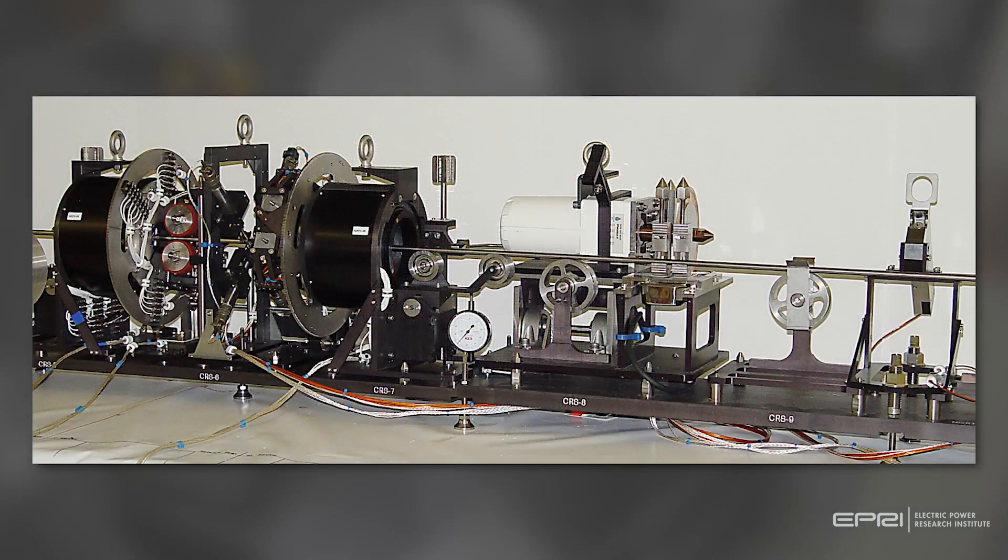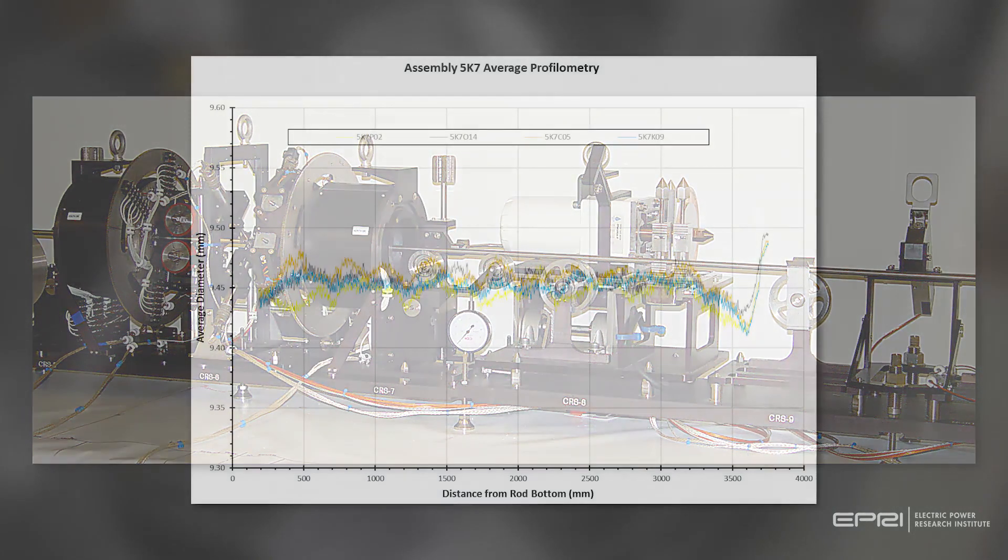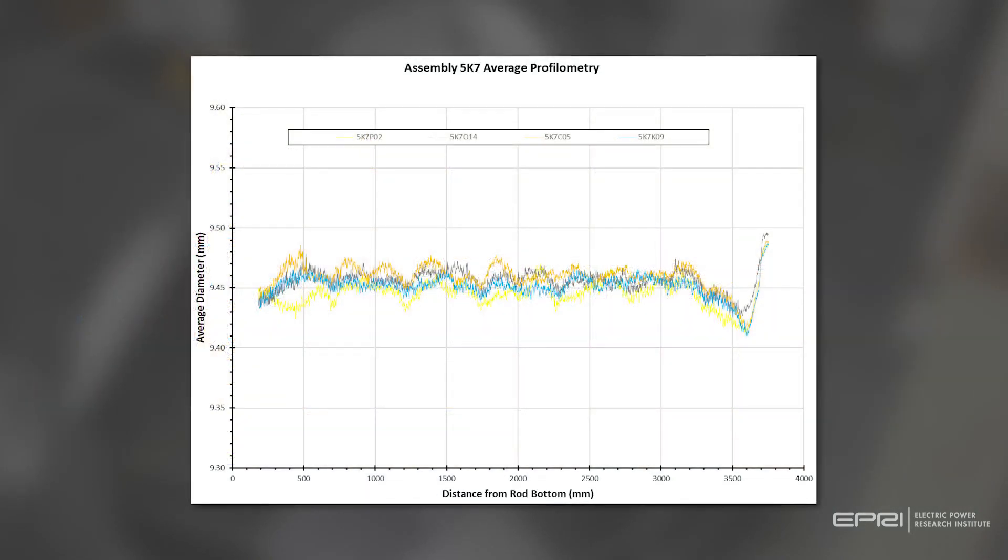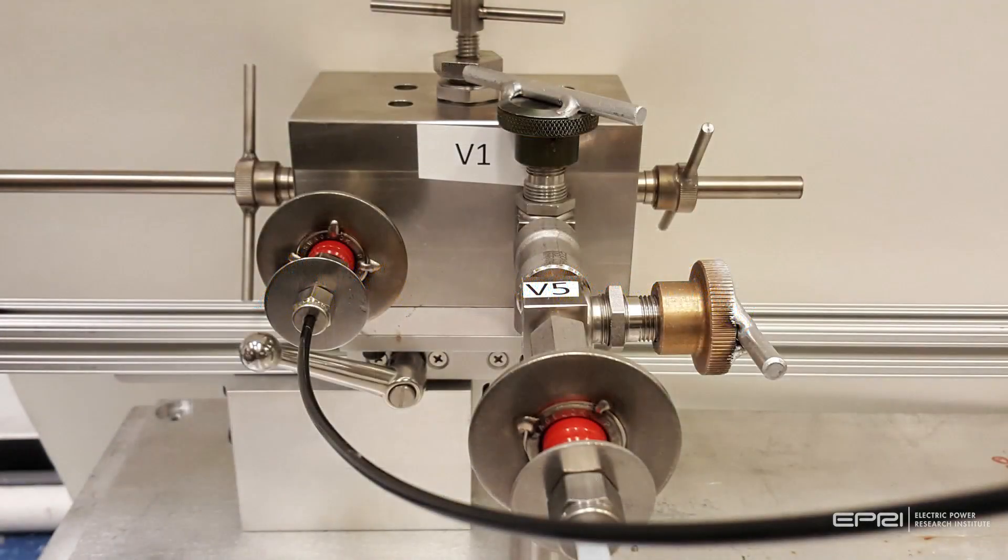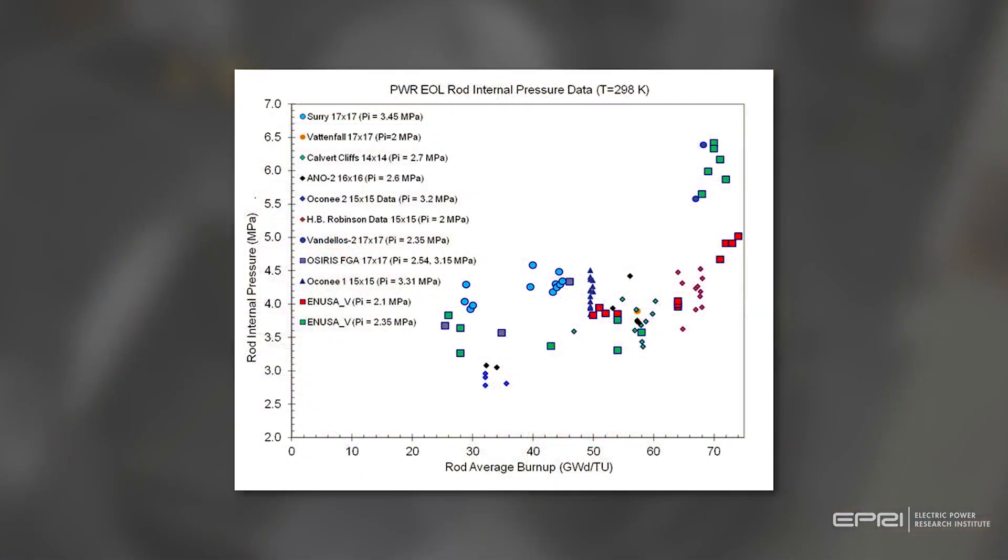Oak Ridge National Laboratory has completed the initial non-destructive inspections of the sister rods. Destructive examinations will begin in 2018, starting with rod puncture tests to determine the pressure inside the rods, an important parameter in understanding the cladding properties and behavior during the period of dry storage.